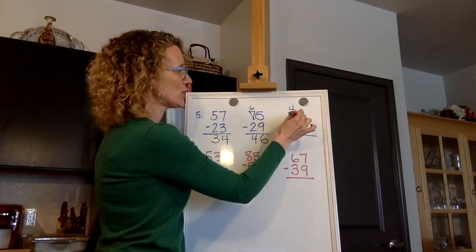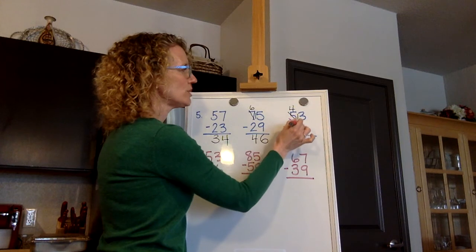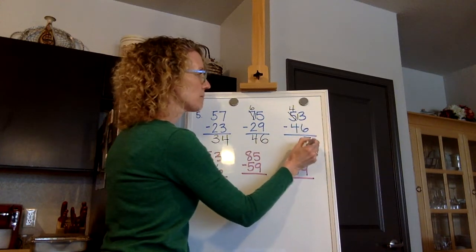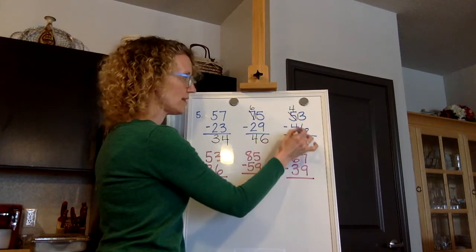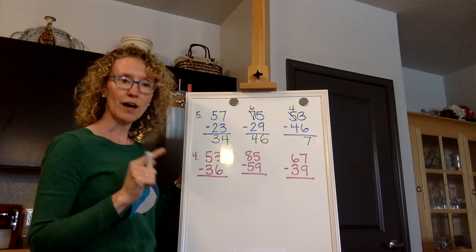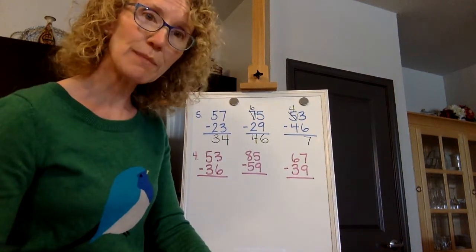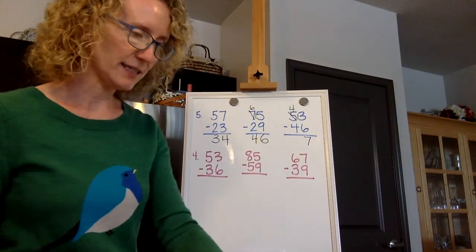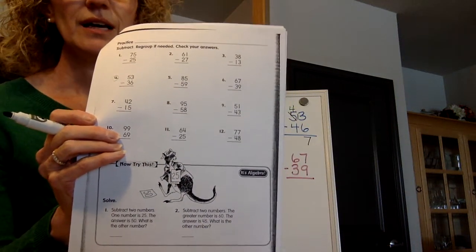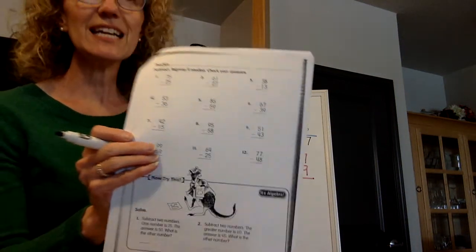See the thirteen? Thirteen minus six. Thirteen, twelve, eleven, ten, nine, eight, seven. Thirteen minus six is seven. Four minus four is zero. You can write the zero or you don't have to. Either way is okay. Turn to the next page. We're going to practice some on the next page, the one with that little kangaroo on the bottom. It says subtract, regroup if needed, check your answers.